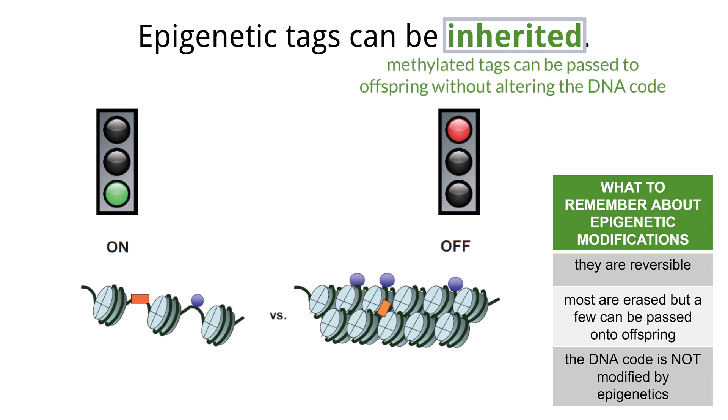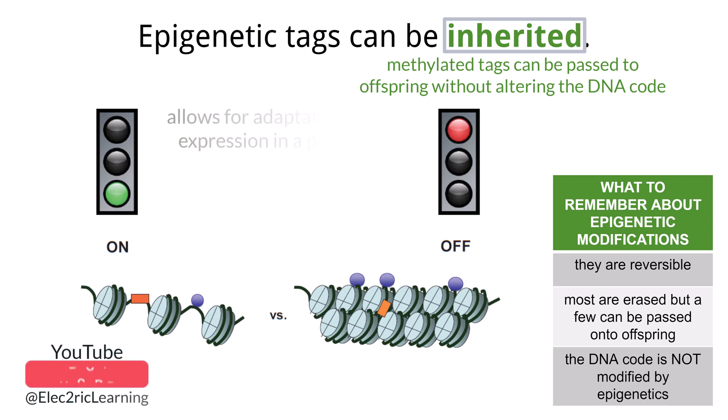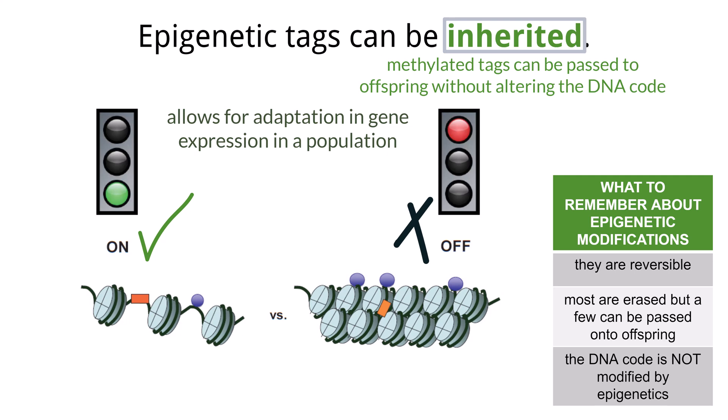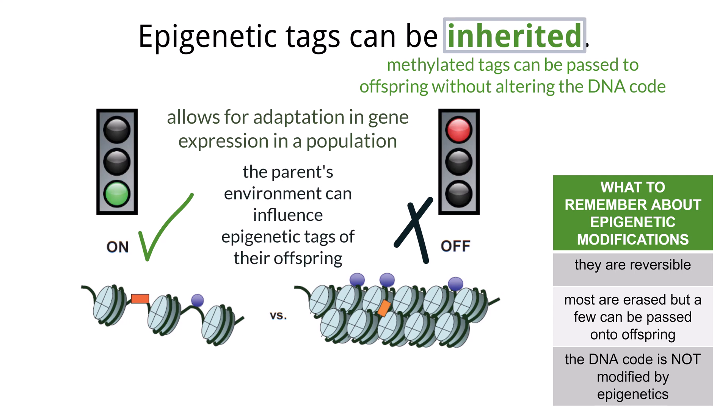This occurs when epigenetic tags, such as DNA methylation or histone modification, remain in place during mitosis or meiosis and are then passed to offspring. Epigenetics can be used for populations as it may allow for adaptation to gene expression in different situations — allowing a genome to be applied differently by either turning a gene off or on. When egg and sperm are produced, many of the epigenetic tags are lost, but some are passed on to the next generation. This means that some experiences of the parental organism influence which genes are activated or silenced in the offspring. Epigenetics is fascinating and there are many studies underway to help understand how methylation occurs.